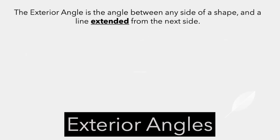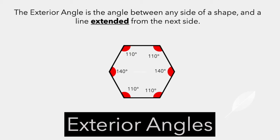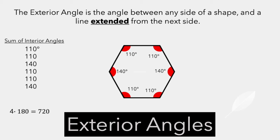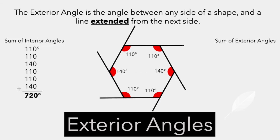Let's try this hexagon. Inside this hexagon we've got angles of 110, 110, 140, 110, 110, 140. Theoretically, if we add all those together, they should equal n minus 2 times 180 — so 6 minus 2 times 180 is 720. Let's add them all up — good, we get 720. Now let's look at the exterior angles. We'll draw each of the exterior angles and for each interior angle find its supplement. So 110 partners with 70, and 140 partners with 40. Adding all of those exterior angles together, we get 360.